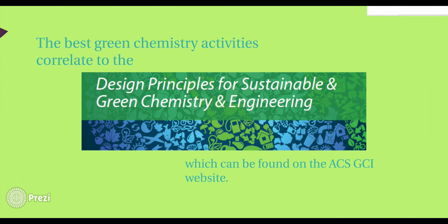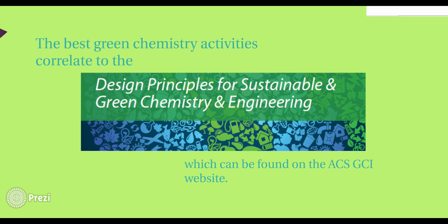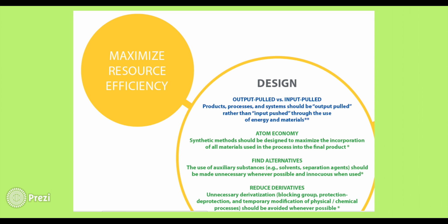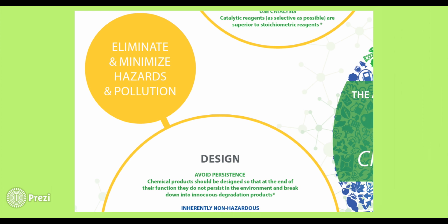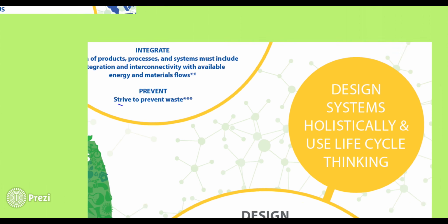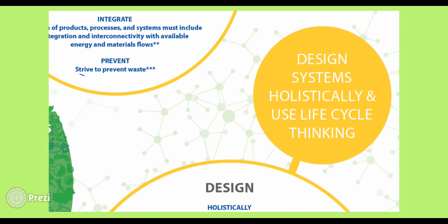The best activities correlate to the design principles of green and sustainable chemistry and engineering, which can be found on the ACS GCI website. The brochure includes ideas like maximizing resource efficiency, eliminating and minimizing hazards and pollution, and designing systems holistically using life cycle thinking. Your chapter's green chemistry activities must in some way connect to the concepts in this brochure.